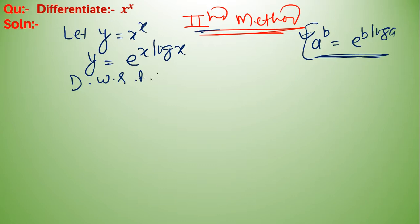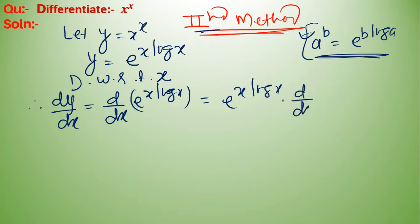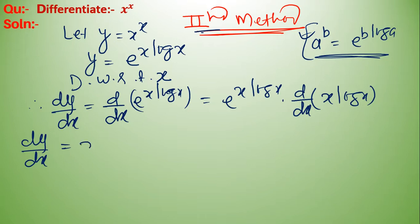Differentiate with respect to x. Therefore dy upon dx equals the derivative of e to the power x log x. First we use the chain rule: e to the power x log x into the differentiation of x log x.